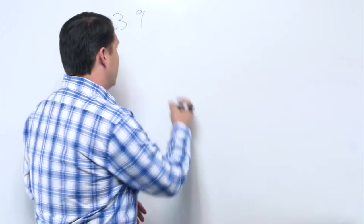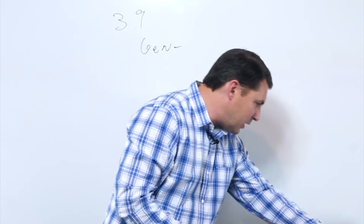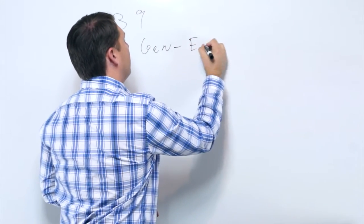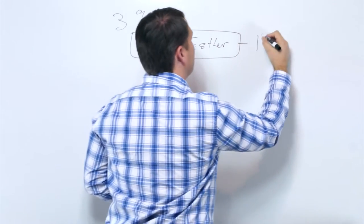The first set of books, Genesis through—it's always this one little book here—oh, Esther. This section we call the historical books.